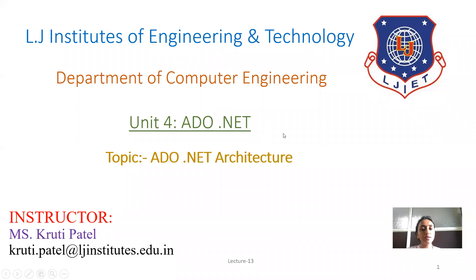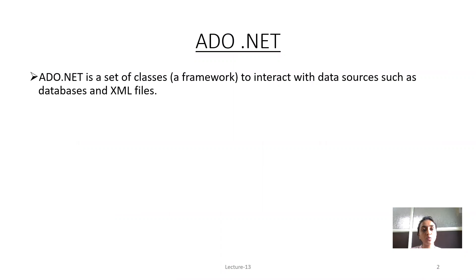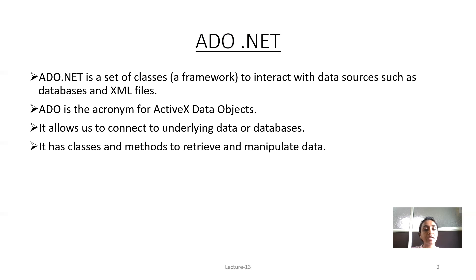Hello everyone. Today we will learn ADO.NET, that is Unit 4, and the major topic is ADO.NET Architecture. ADO.NET is a set of classes, a framework to interact with data sources such as databases and XML files. ADO is an acronym for ActiveX Data Object. It allows us to connect to underlying data or databases, and it has classes and methods to retrieve and manipulate data.